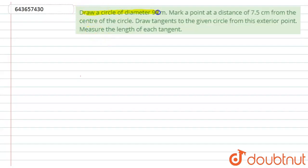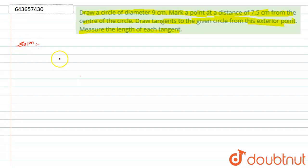The question is: draw a circle of diameter 9 centimeters, mark a point at a distance of 7.5 centimeters from the center of the circle, draw tangents to the given circle from this exterior point, and measure the length of each tangent.